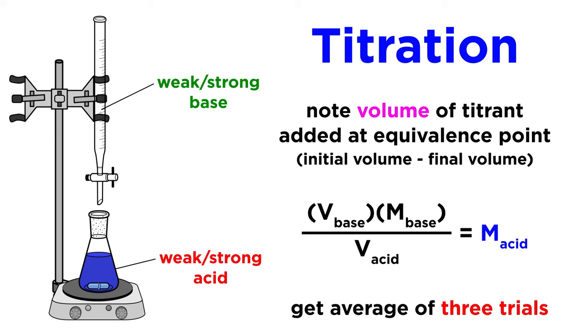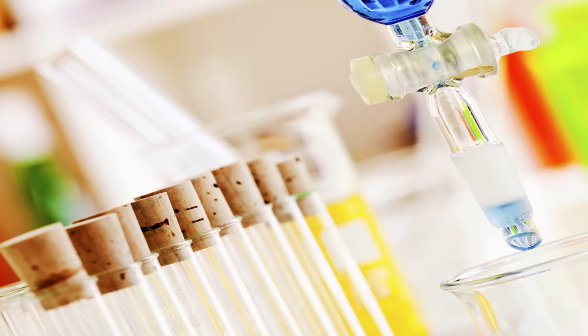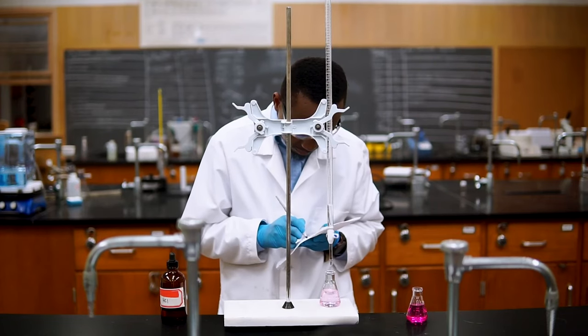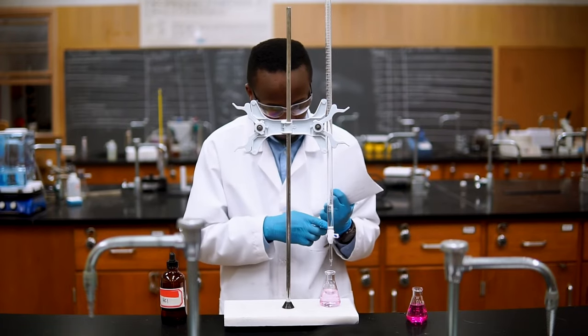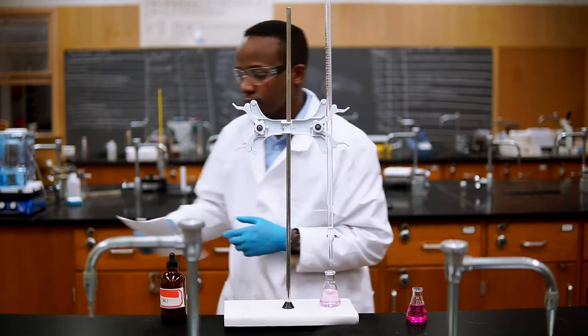Titration certainly gets much more complicated than this, even simply by utilizing a weak acid or base as either the titrant or analyte, which will change the pH of the equivalence point and therefore the indicator that is used. There are also several other types of titrations, such as redox titrations. But for now we have covered the most basic titration setup, so that we have a firm grasp of how to do this type of analytical chemistry.